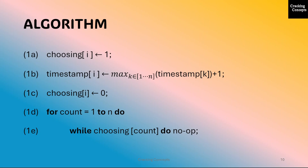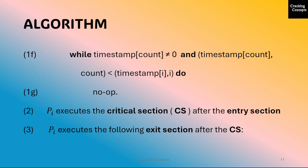To stabilize, i will wait until the choosing variable of j is set to false. Once stabilized, i moves from line 1e to 1f. Either j is not requesting — in which case j's timestamp is 0 — or j is requesting. Line 1f determines the relative priority between i and j. The process with a lexicographically lower timestamp has higher priority and enters the critical section. The other process has to wait. Hence mutual exclusion is satisfied here.